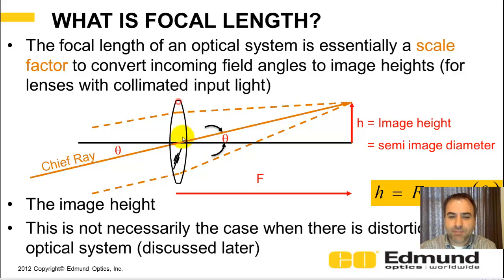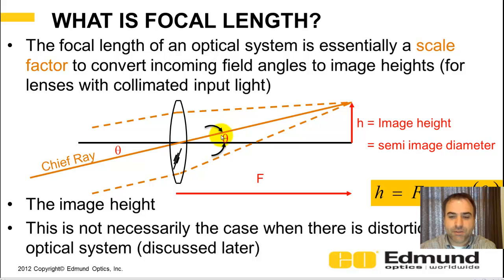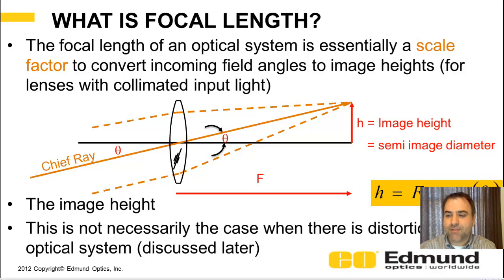What is focal length? Let's take a simple lens with a collimated beam — your object is infinitely far away and has some height. The chief ray comes in at an angle; recall, the chief ray goes through the center of your aperture stop. For a simple lens, the aperture stop is the lens itself, so the angle of the chief ray on input is essentially equal to the angle on output. When you have an object at infinity with some height, it maps to an image height h on your detector plane. Focal length is simply a scale factor: h equals f times tangent theta.